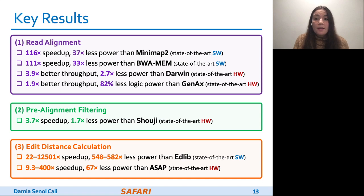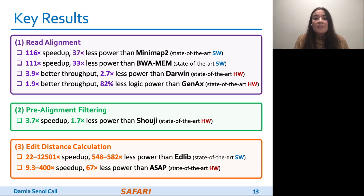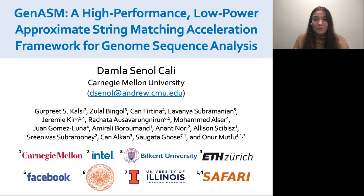We find that for all three use cases, GENASM is significantly more efficient in terms of both speed and power consumption than state-of-the-art software and hardware baselines. Thank you.